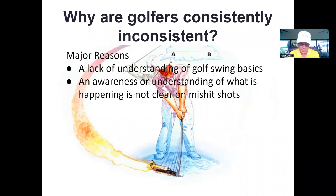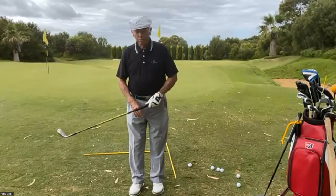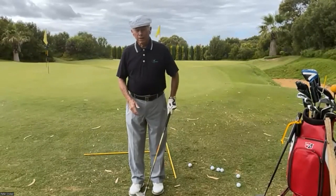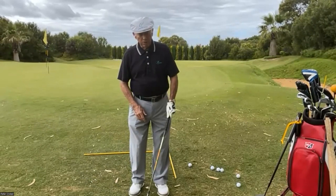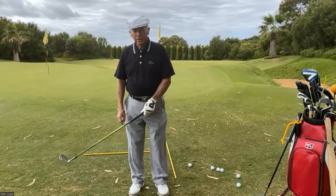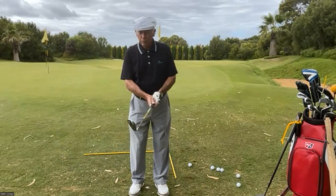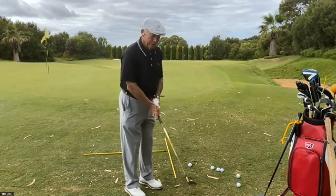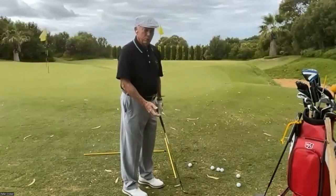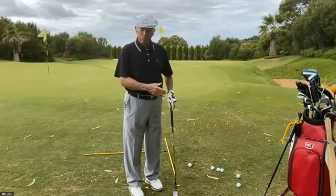Another major reason for inconsistency is a lack of awareness of what's happening when you mishit a shot — whether it's a putt, chip, drive, or iron shot. The moment of truth is when the club hits the ball. The club face needs to be traveling on the correct path, with the face at right angles to that path for a straight shot. If you don't understand what takes it off path, you're in a mystery about how to correct yourself and get back on track.